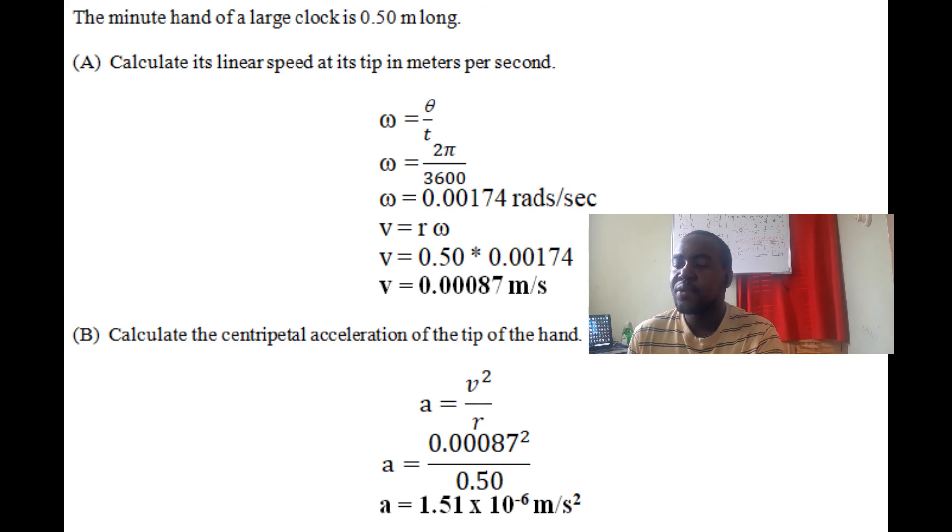Part B: Calculate the centripetal acceleration of the tip of the hand. We know centripetal acceleration is v²/r. We substitute v = 0.00087 squared over r = 0.50, so we get the acceleration to be 1.51 × 10⁻⁶ m/s².